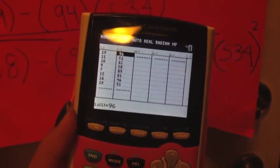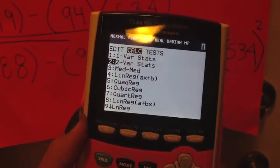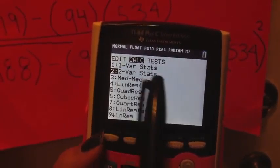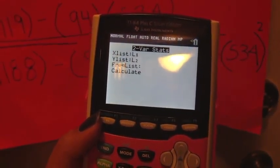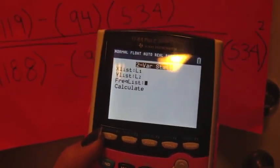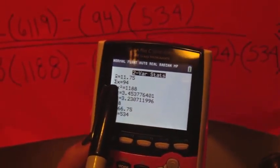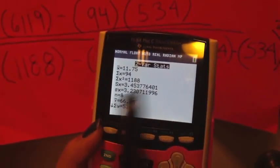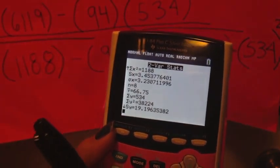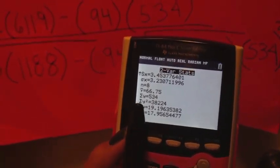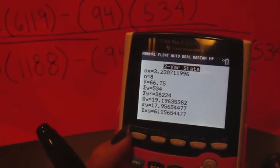From there, you're going to go to stat, calculate, go to number 2, 2 variable stats. And then you're going to put in your list, and you're going to calculate, and it's going to give you all of the values that you need. Your sum of x, your sum of x squared, your n, sum of y, sum of y squared, and your sum of xy.